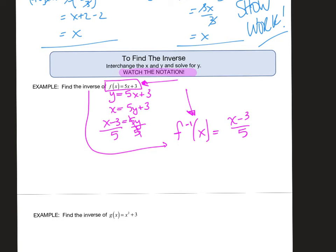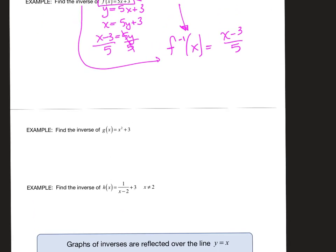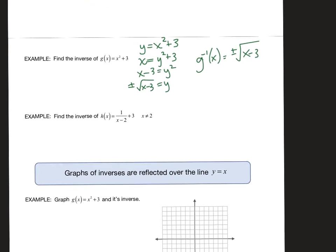Let's try another. Find the inverse of this. So let's write it the way it was originally, then let's switch the X and the Y, then let's solve for Y. Plus or minus, don't forget that plus or minus. You're almost there, you just have to make sure you use the correct notation: plus or minus the square root of X minus 3.